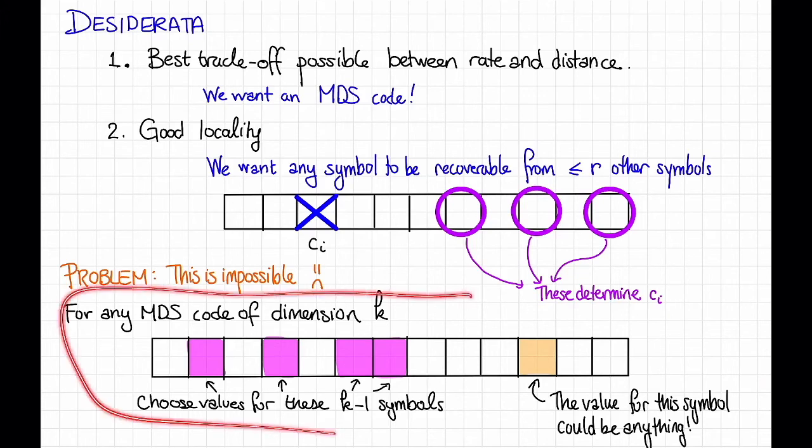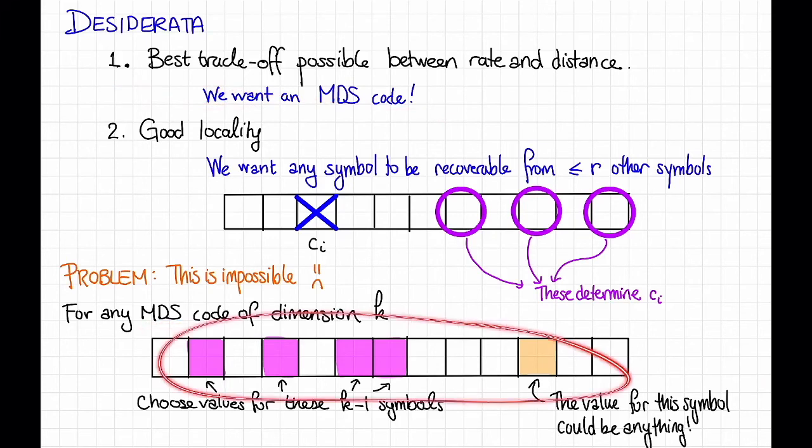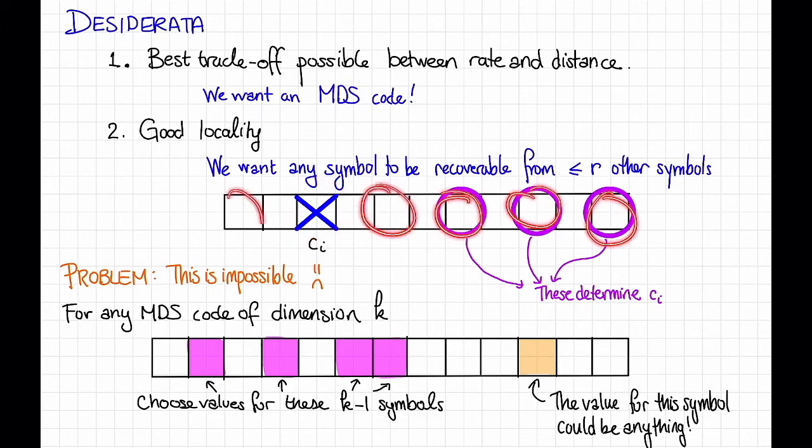Okay, so given this fact, then, why are these two things impossible? Well, we wanted an MDS code, so this fact applies, but we also wanted good locality. However, this fact says that, for example, if we wanted this symbol, we need to query at least k other symbols. Fewer than k is not going to cut it.